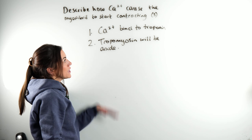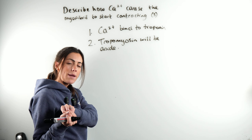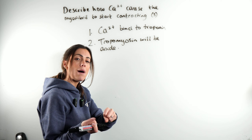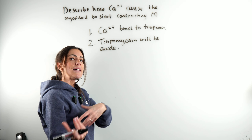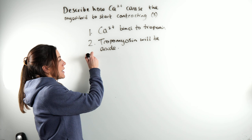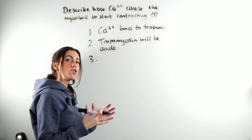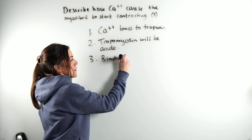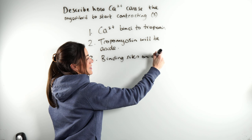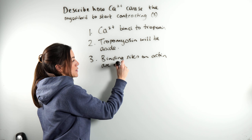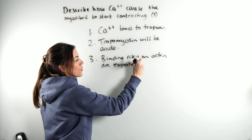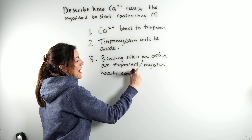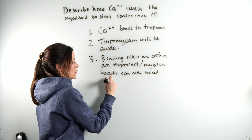The calcium ions bind to the troponin, which causes the troponin to change shape, which will pull on the tropomyosin and move the tropomyosin to one side. In moving the tropomyosin, what you're then going to do is expose the binding sites on the actin. So binding sites on actin are exposed.